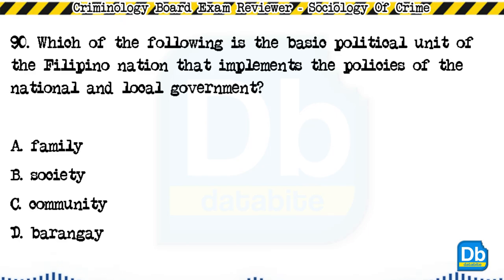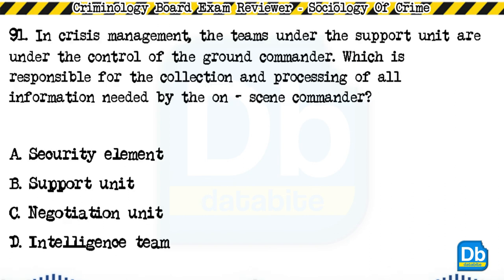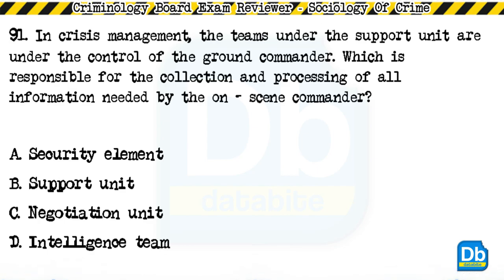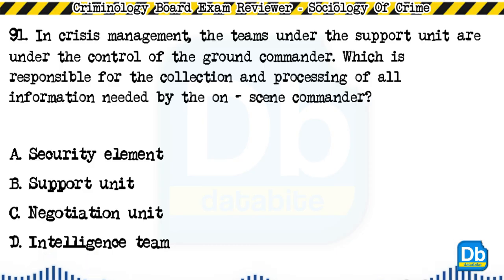Question 91: In crisis management, the team under the support unit or under the control of the ground commander which is responsible for the collection and processing of all information needed by the on-scene commander is: a) security element, b) support unit, c) negotiation unit, d) intelligence team. The answer is D, intelligence team.